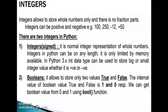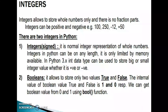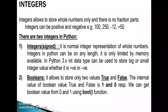Signed means we can give the sign to that particular integer value. It is a normal integer representation of whole numbers. Integers in Python can be of any length — it is only limited by the memory available. In Python 3.x, the int data type can be used to store big or small integer values, whether positive or negative.